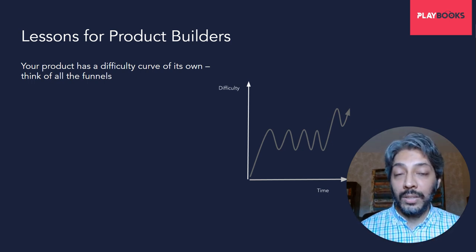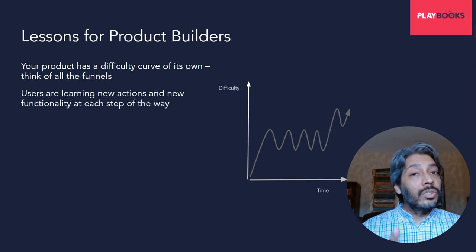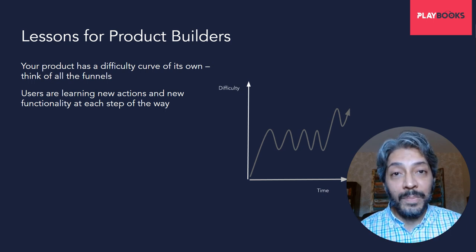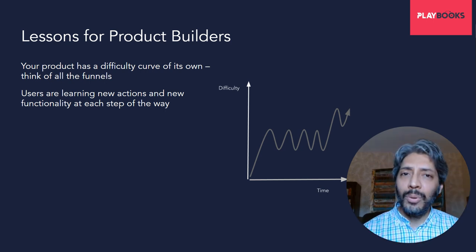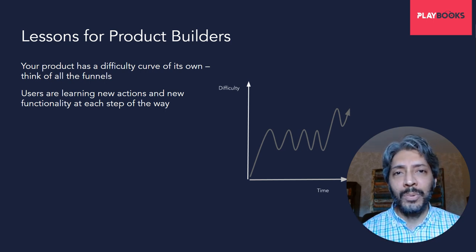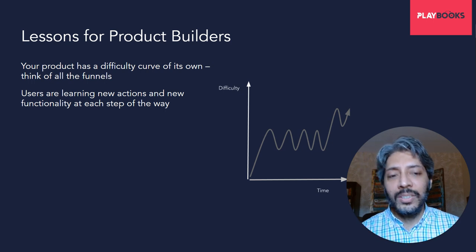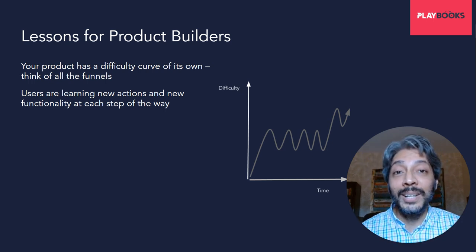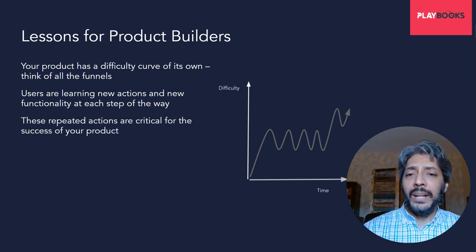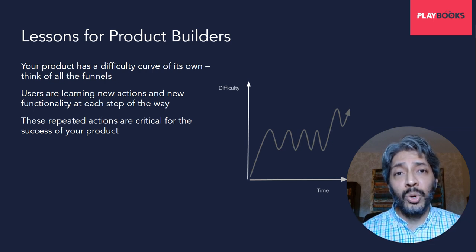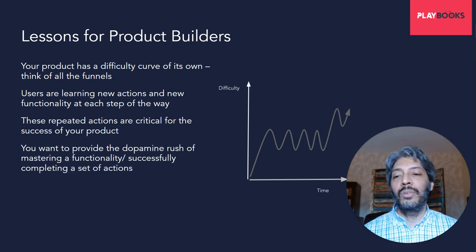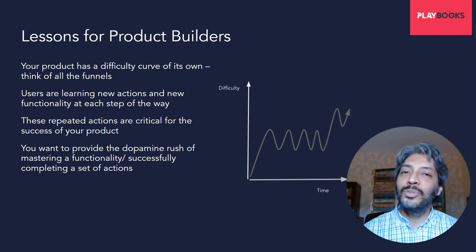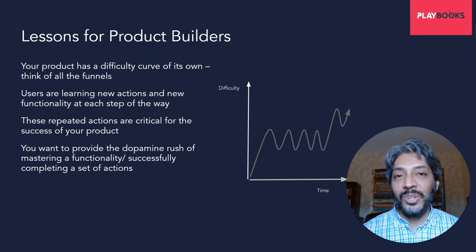Break apart the different parts of your product's funnels and see what difficulty curves they follow. Users are learning new actions and functionality at each step — but are they enjoying it? That rising sense of difficulty and local maxima — does it lead to a local minima where they feel, okay, I've searched for a product, I can search for another, I've purchased something, it'll be easier next time? You want to provide that dopamine rush of mastering a functionality successfully. You want users to see that nice big blue tick mark that comes when you order on Swiggy — that feeling of having ordered a meal successfully. It's such a good feeling.